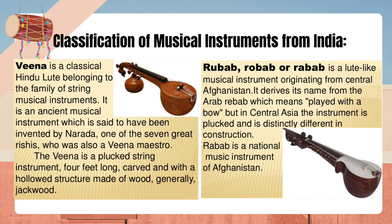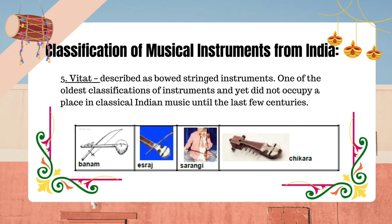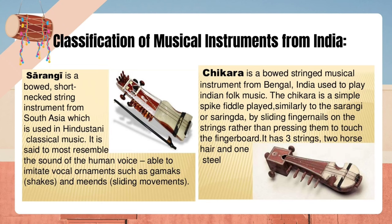Veetat: described as bowed stringed instruments, this is one of the oldest classifications of instruments and yet did not occupy a place in classical Indian music until the last few centuries. Sarangi is a bowed, short-necked string instrument from South Asia used in Hindustani classical music. It is said to most resemble the sound of the human voice, able to imitate vocal ornaments such as gamaks (shakes) and meend (sliding movements). Shakara is a bowed stringed musical instrument from Bengal, India, used to play Indian folk music — a simple spike fiddle played by sliding fingernails on the strings rather than pressing them to the fingerboard. It has three strings: two horsehair and one steel.